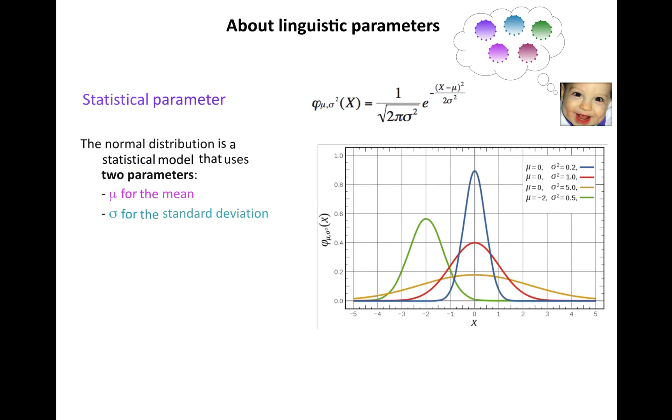To make this more concrete, let's walk through an example of the normal distribution, which is a model that uses two statistical parameters: μ for the mean and σ for the standard deviation. We have a variety of different normal bell curves depending on what our values of μ and σ are.